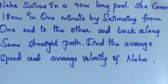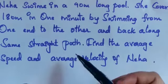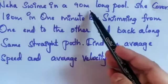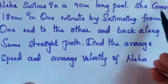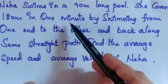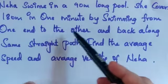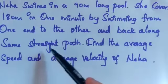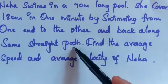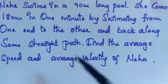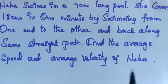Based on our understanding of distance, displacement, velocity, and acceleration, we will solve some problems based on that. The first one is: Neha swims in a 90-meter long pool. She covers 180 meters in one minute by swimming from one end to the other and back along the same straight path. Find the average speed and average velocity of Neha.